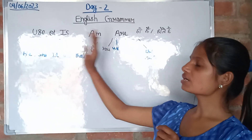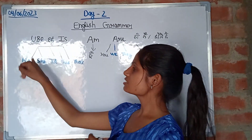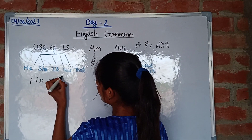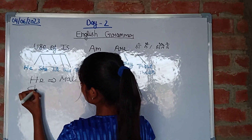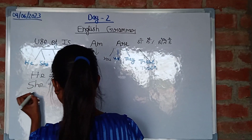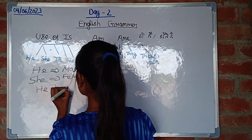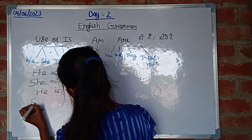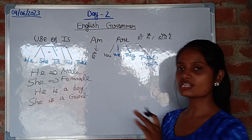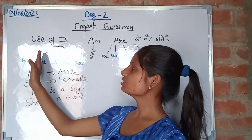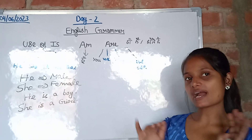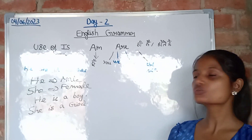Today we will learn where we use 'is'. 'He' is used for a male person, and 'she' is used for a female. We can make sentences like: he is a boy, and she is a girl. For example, she is a woman and he is a man — like this we can use 'is'.